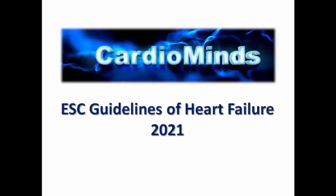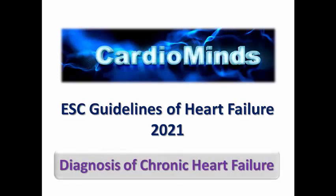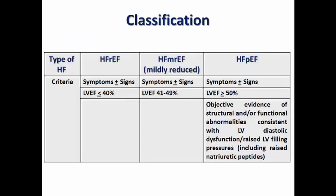Hello everyone in CardioMind's channel. After we spoke in the last video about the definition, classification and prognosis of heart failure, we are continuing today with the diagnosis of chronic heart failure. We remember this table from the last video which divides heart failure into three subtypes. The cardinal feature in all three is the presence of symptoms plus or minus signs, and the difference is in the cut-off point for ejection fraction.